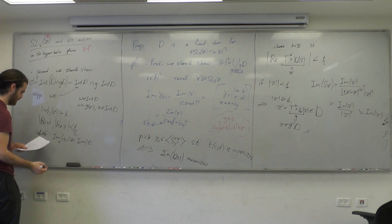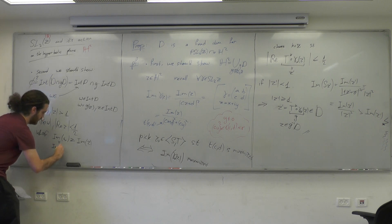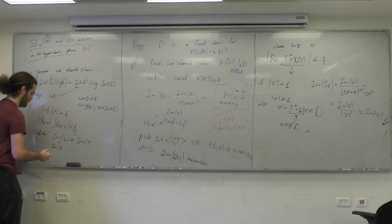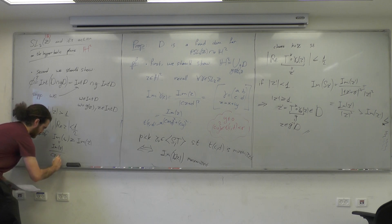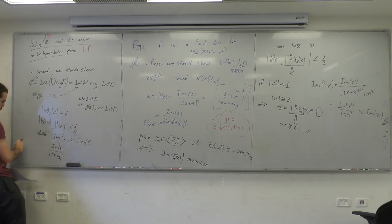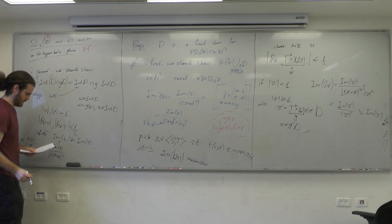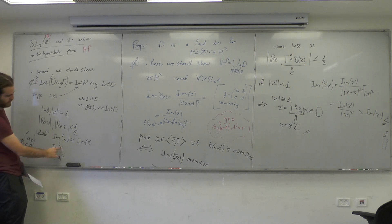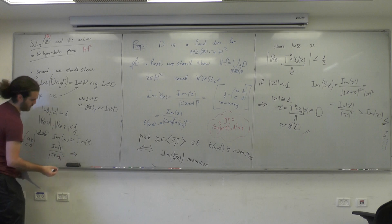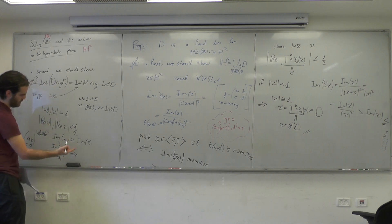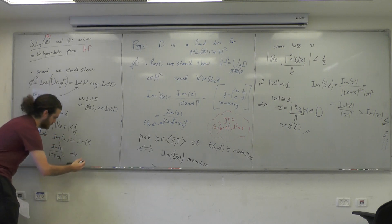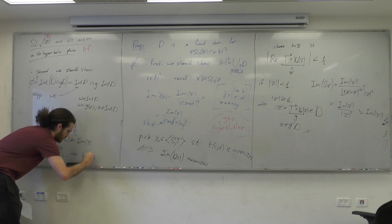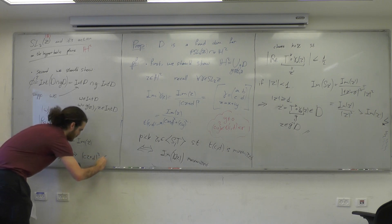Using the same formula again, the imaginary part of w equals the imaginary part of Z over |CZ + D|² where G = [[a,b],[c,d]]. Since Im(w) ≥ Im(Z) and Im(Z) is nonzero, we can switch sides and obtain that |CZ + D|² is bounded by 1.